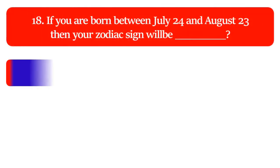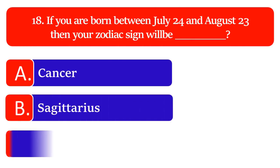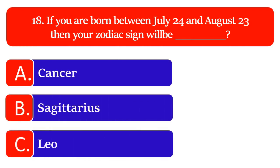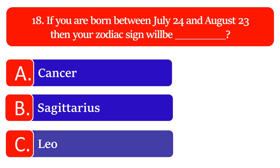If you are born between July 24 and August 23, then your zodiac sign will be: Cancer, Sagittarius or Leo. The great answer is Leo.